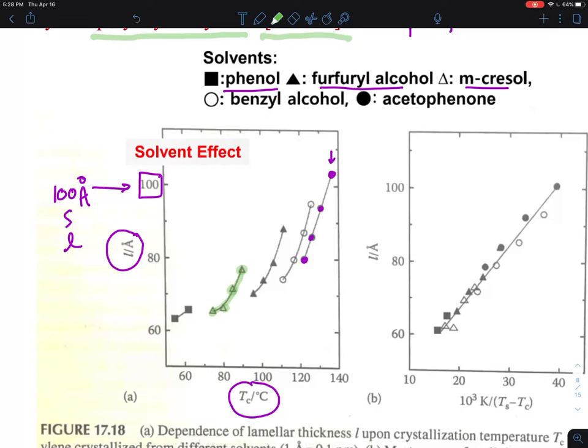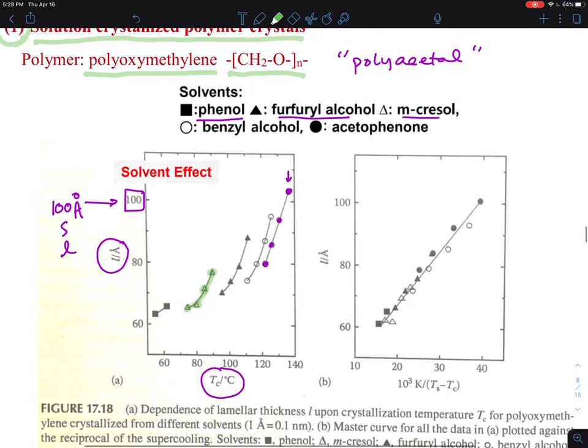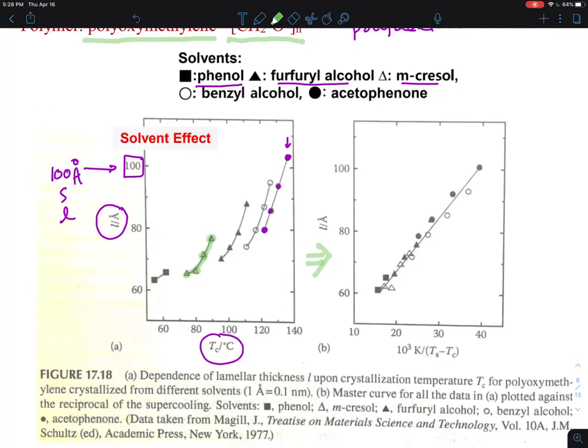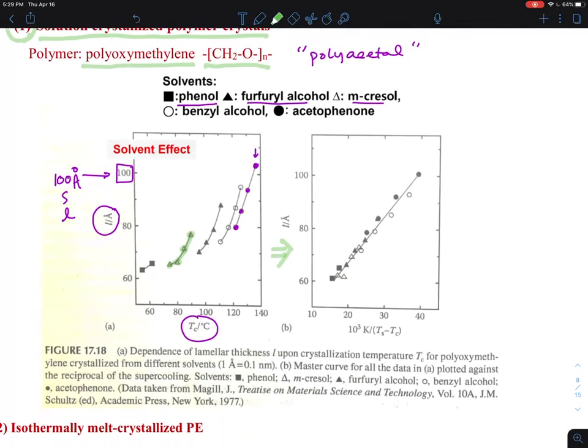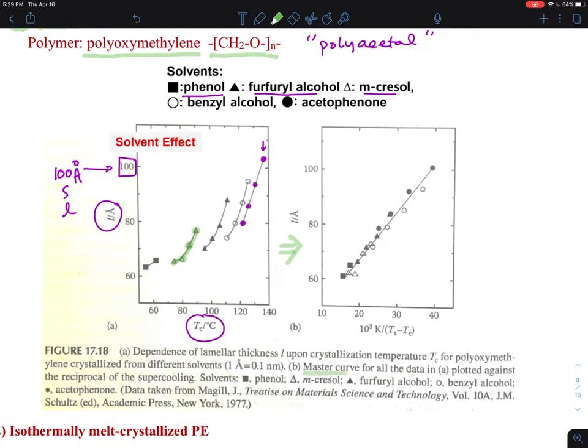It is also what temperature the crystallization starts to trigger. And they are actually having this data into a more universal form. What they did is, this is figure B, which is a master curve for all the data plotted against the reciprocal of supercooling. So this is temperature.